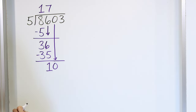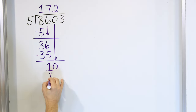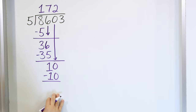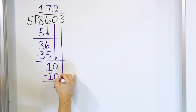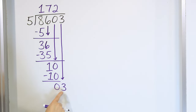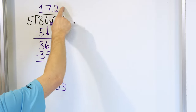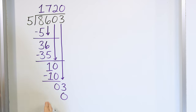Now we have a 10. 5 times 2 is 10, so we multiply and get a 10 here and subtract. 10 minus 10 is 0. After we subtract, we grab the next digit — which is a 3 — drag it all the way down. Now we have a 3. 5 times 1 is 5, that's already too big, so back up to 0. 5 times 0 is 0. 3 minus 0 gives an answer of 3.